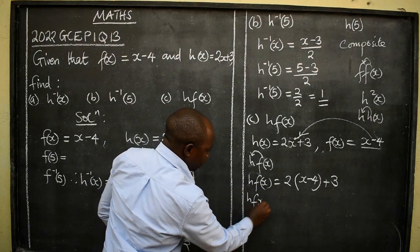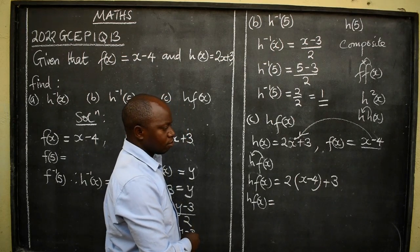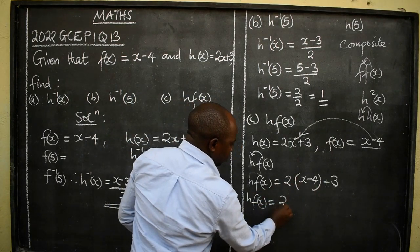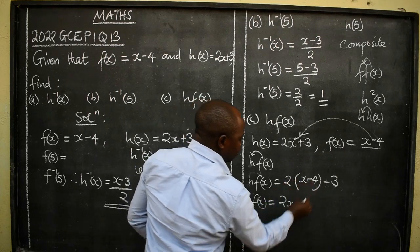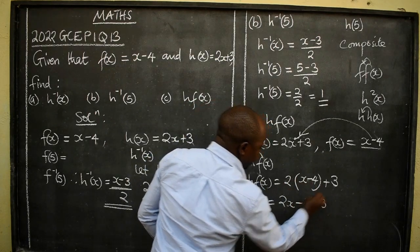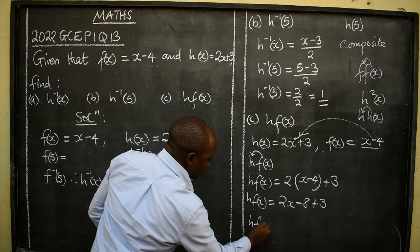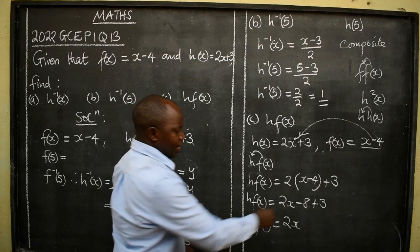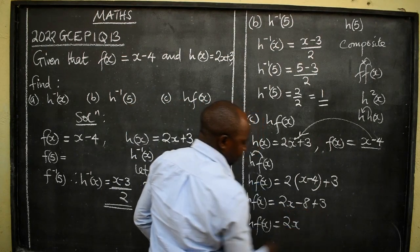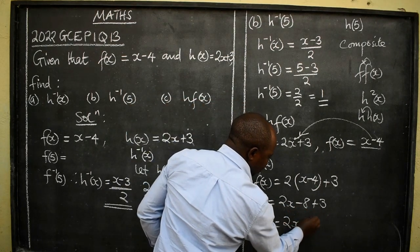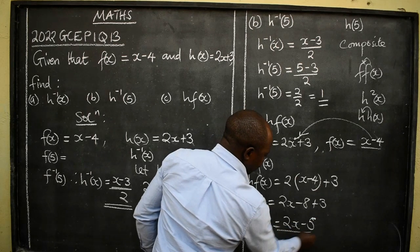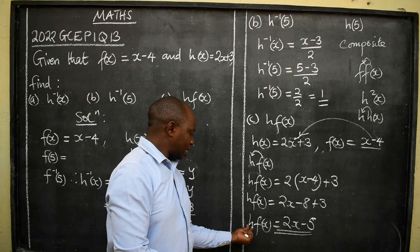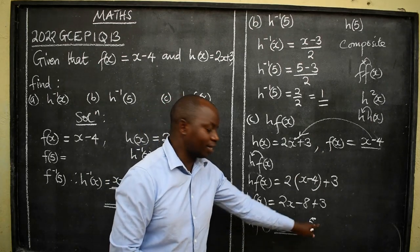Now simplify. h(f(x)) = 2(x − 4) + 3. Multiply: 2 times x is 2x, and 2 times 4 is 8. So we have 2x − 8 + 3. Then add: −8 + 3 = −5. Therefore the composite function h(f(x)) is equal to 2x − 5. That is the final answer.